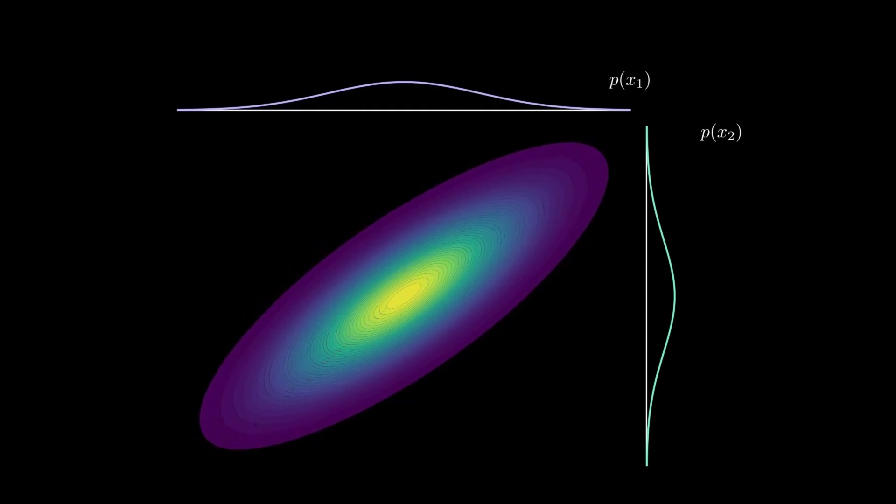What copulas allow us to do is decouple the joint distribution into two parts. The marginals, which describe each variable individually, and the copula, which captures how they are linked. This gives us complete flexibility.